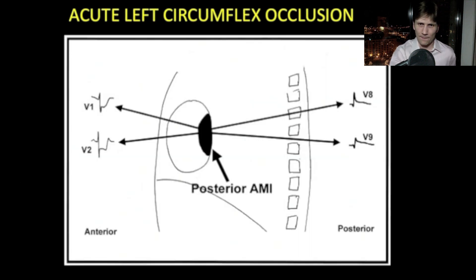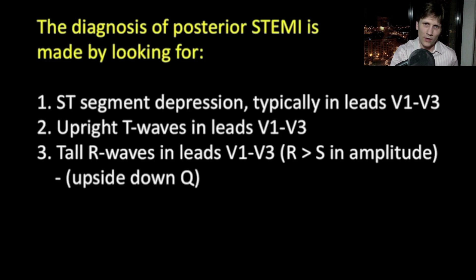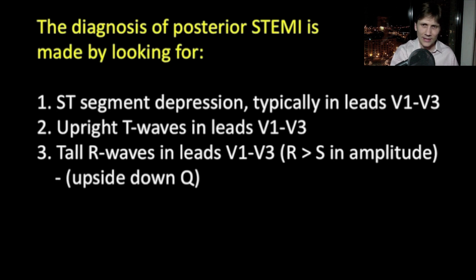Here's a diagram showing why you get ST depressions in V1 and V2 — it's just opposite of the anterior wall, so things look opposite. What do you look for on the EKG to detect posterior MI? Number one: ST segment depression, typically in leads V1 through V3. Number two: upright T waves in leads V1 through V3. Number three: tall R waves in leads V1 to V3, where R is greater than S in amplitude — that typically happens when the tissue has totally infarcted. The tall R waves are actually the Q wave turned upside down. Everything is sort of the opposite, and they should be wide like Q waves as well.